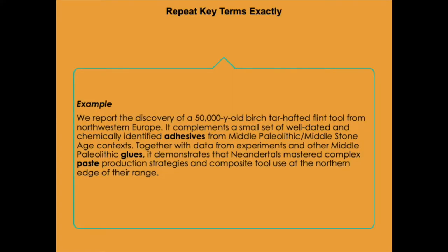Here's an example of using key terms consistently within a paragraph. This paragraph says: 'We report the discovery of a 50,000-year-old birch tar-hafted flint tool from northwestern Europe. It complements a small set of well-dated and chemically identified adhesives from Middle Paleolithic/Middle Stone Age contexts. Together with data from experiments and other Middle Paleolithic glues, it demonstrates that Neanderthals mastered complex paste production strategies.' In the first sentence they use 'adhesive,' in the second 'glue,' and in the third 'paste.'